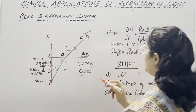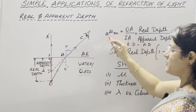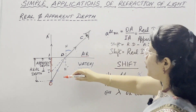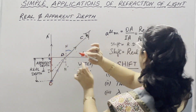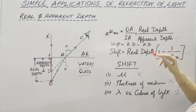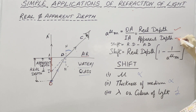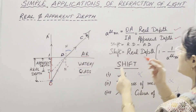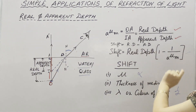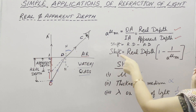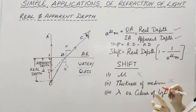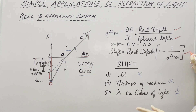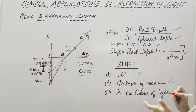AO is the real depth. So refractive index of medium with respect to air is equal to OA — the real depth — divided by IA — the apparent depth. So OA upon IA equals real depth upon apparent depth. Shift is real depth minus apparent depth, or shift equals real depth times (1 minus 1/μ). Derivation is not required, but the formula you need to remember for the calculation of numericals given in the exercise.